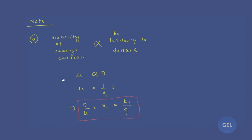The first note point: mobility of a charge carrier is directly proportional to the tendency to diffuse. Mobility is drift velocity per electric field. If the mobility of a charge carrier is more, it will diffuse more. So mu is directly proportional to D, with a proportionality constant of 1/Vt — this gives us the Einstein relationship, which is extremely important for GATE, ESC, and PSU exams.